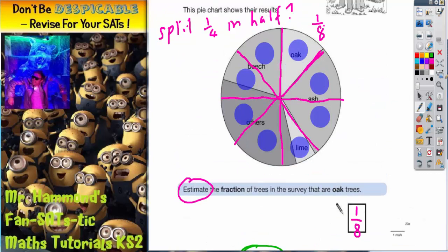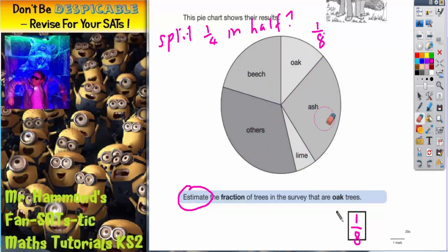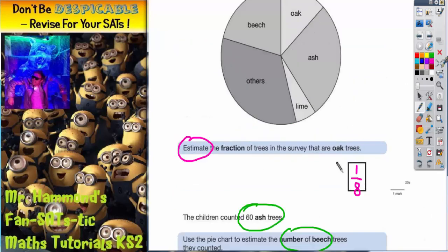Now let's go back up to the pie chart. Now obviously all of these markings are just going to confuse us so let's get rid of those. Have a look at a fresh pie chart again. Let's think about what we're dealing with. We're dealing with 60 ash trees.